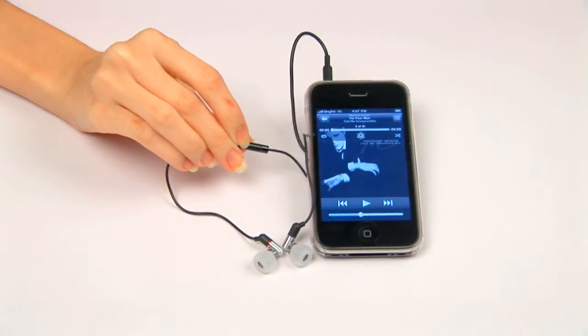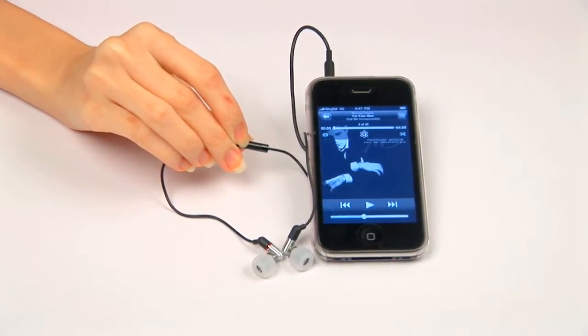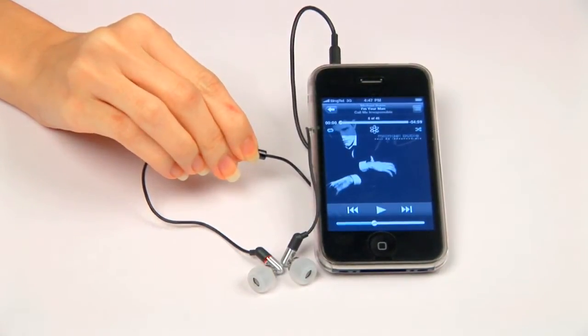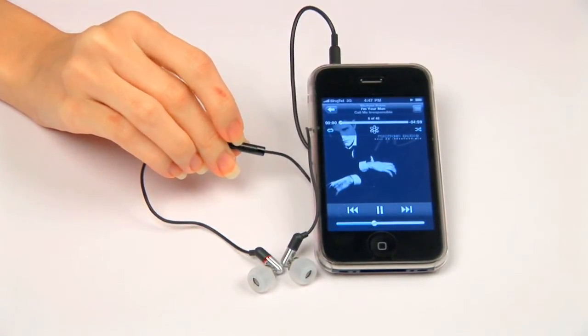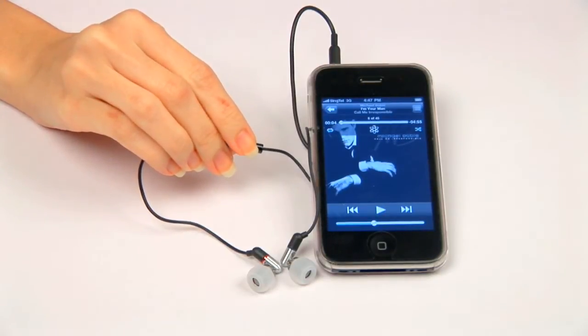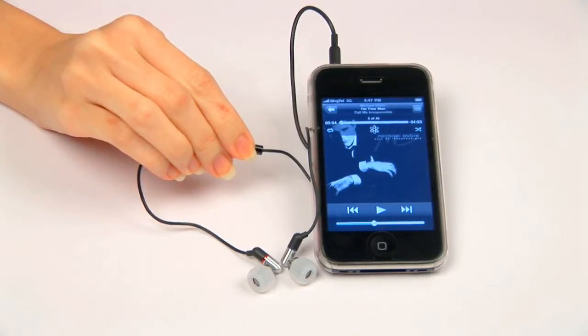Now, we'll show the use of the headset with the iPhone. For iPhone use, by pressing once on the microphone button, you can play or pause your music track. While pressing twice allows you to skip to another track.